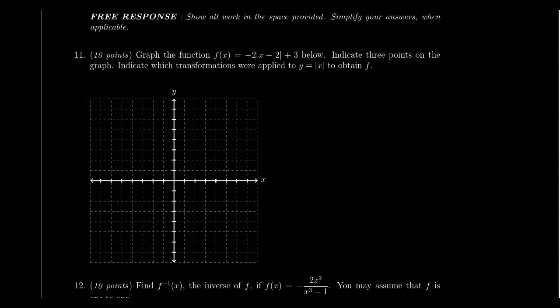In this video, we present the solution to question number 11 for practice exam number one of MATH 1210. You were asked to graph the function f(x) equals negative 2 times the absolute value of x minus 2 plus 3, and we need to graph that in the grid lines provided over here.